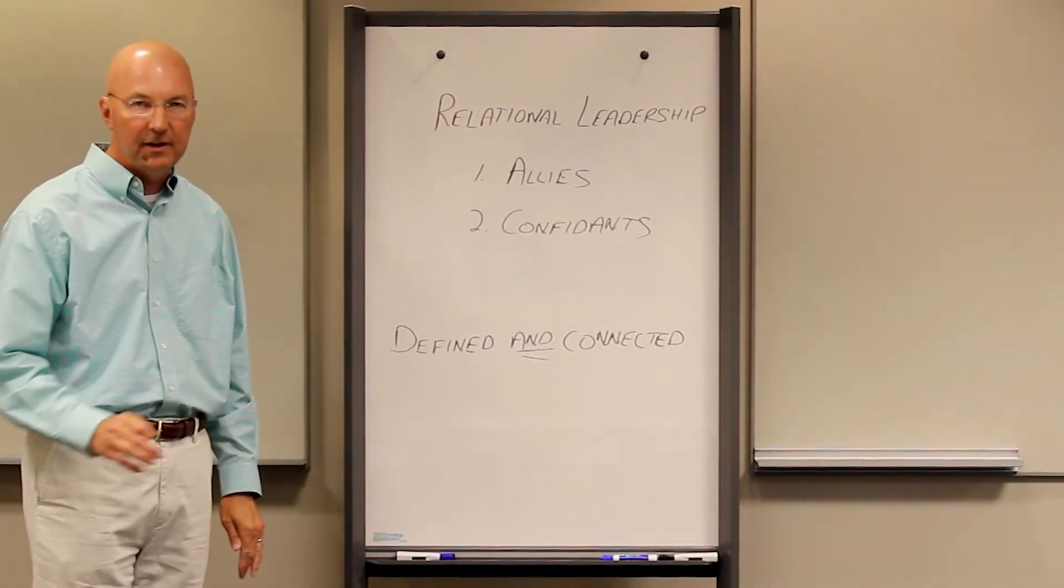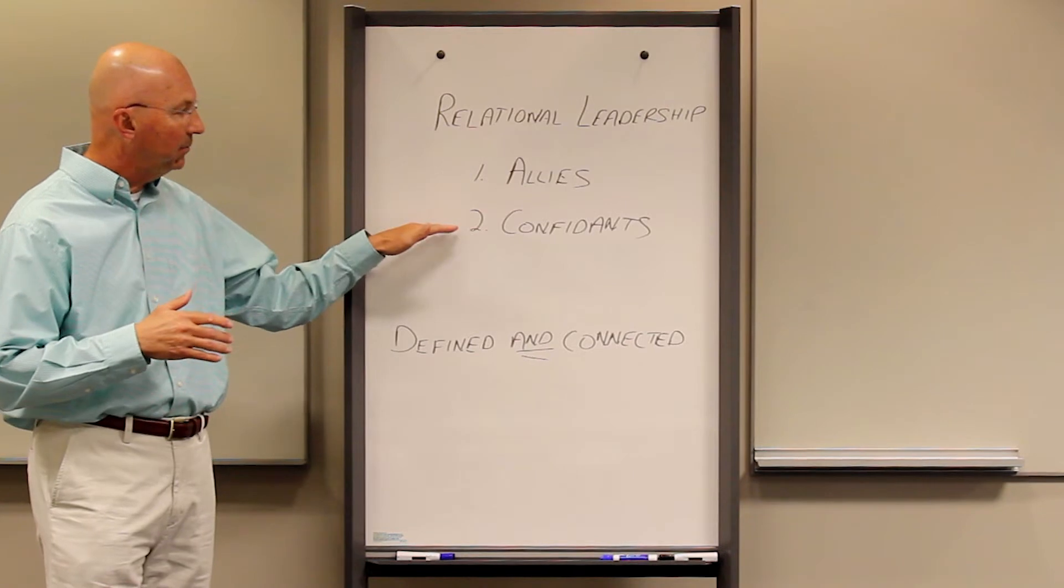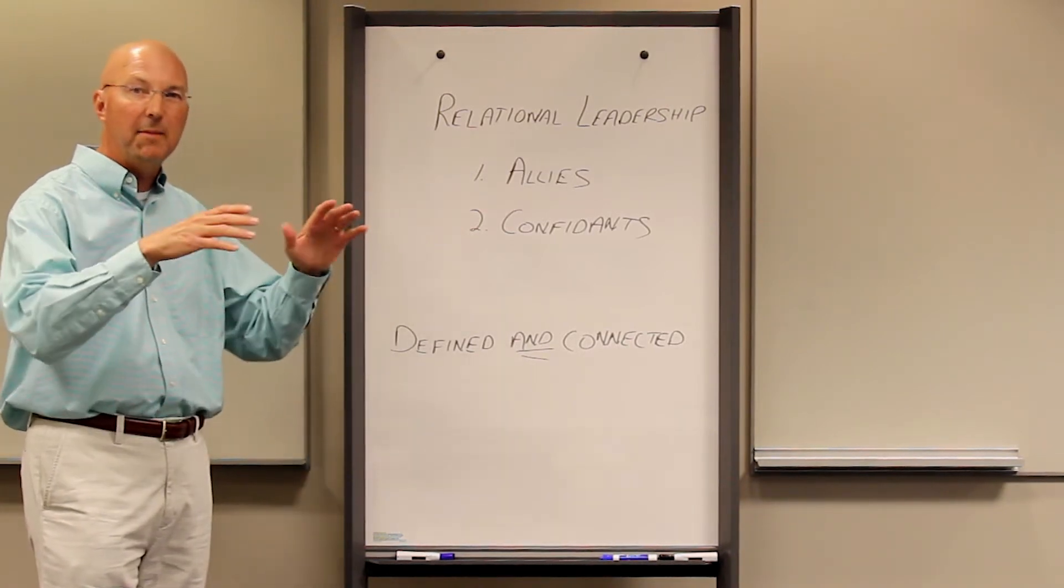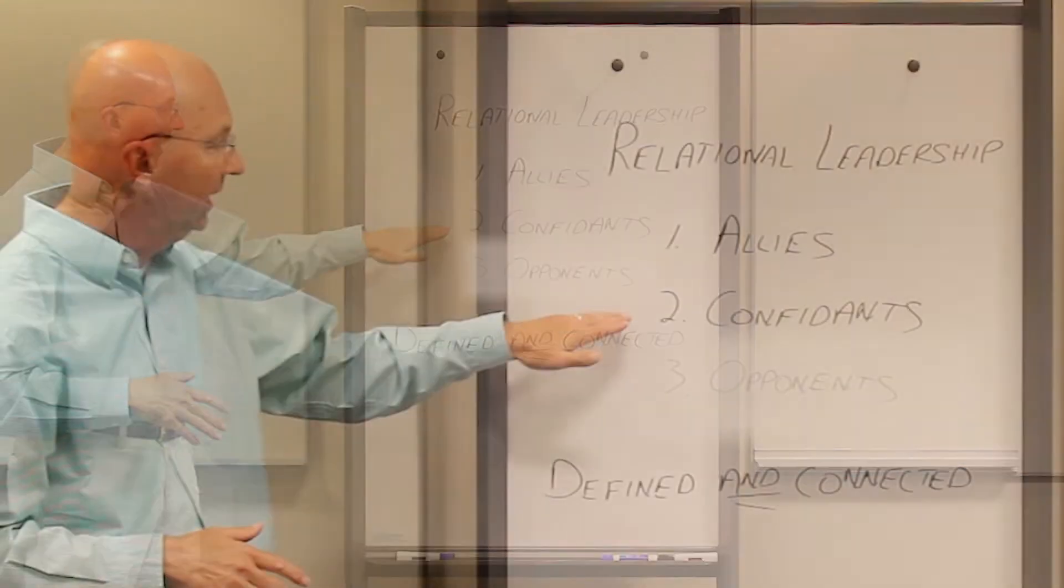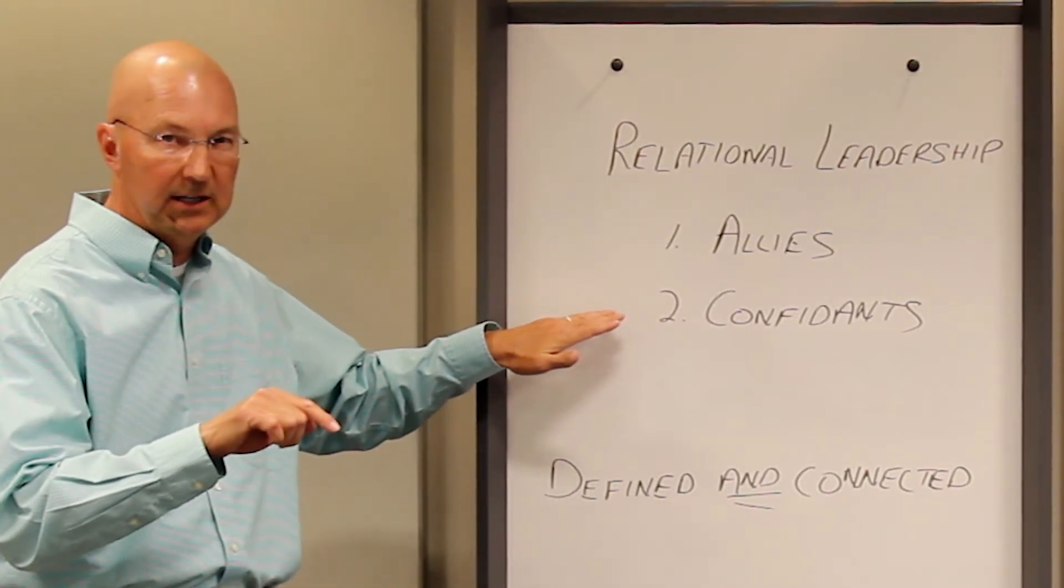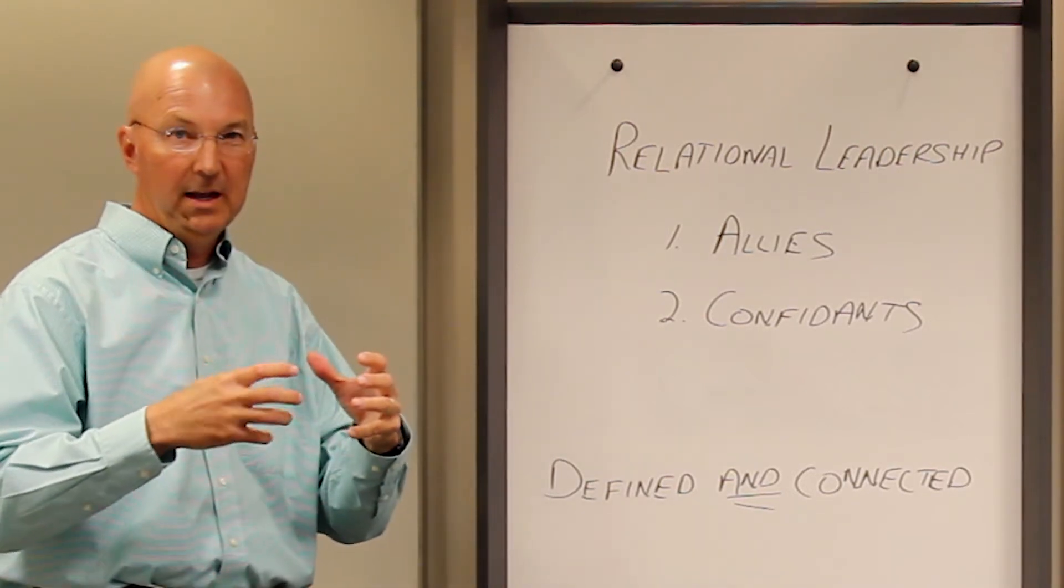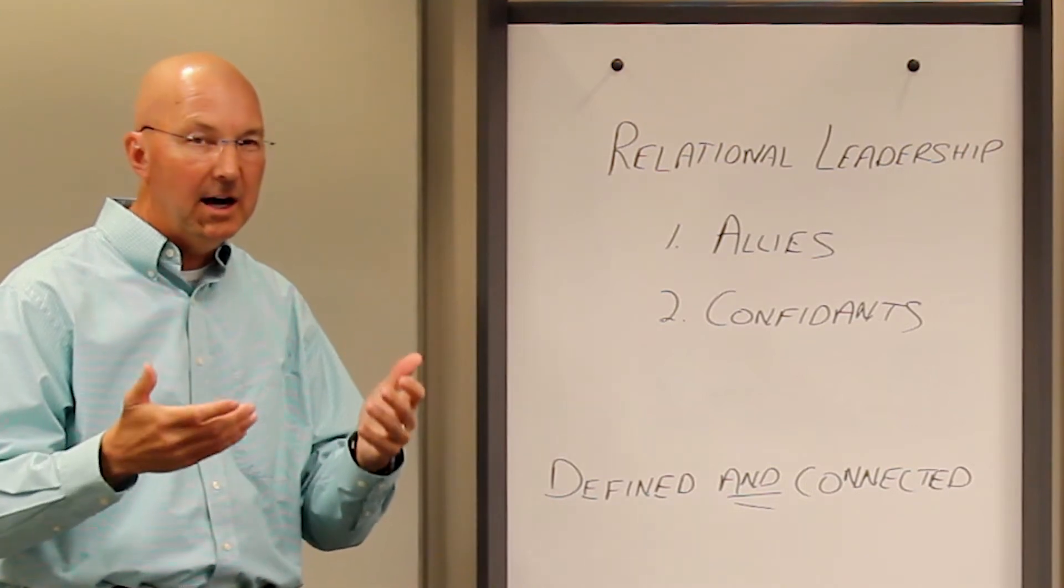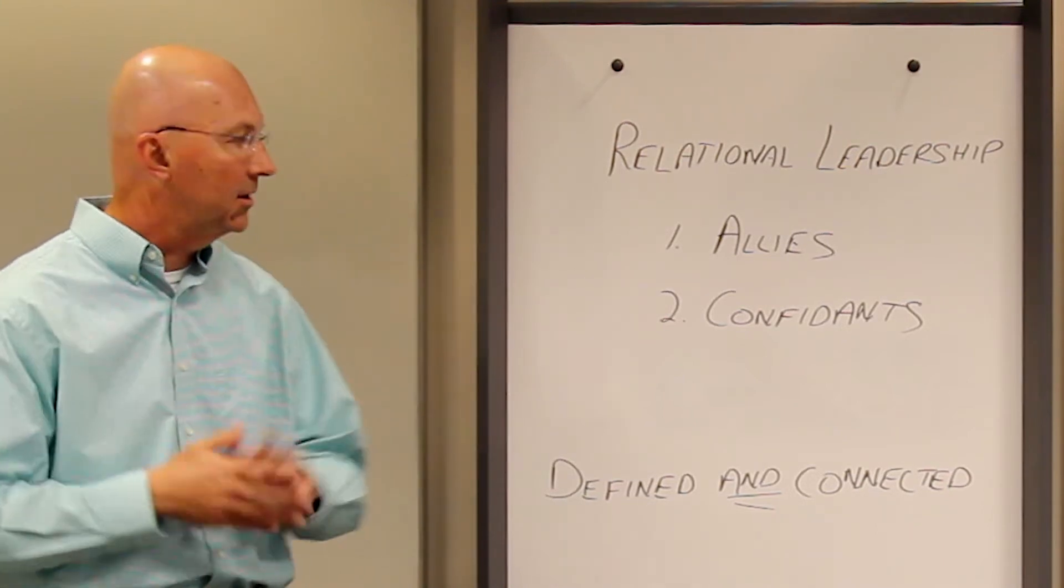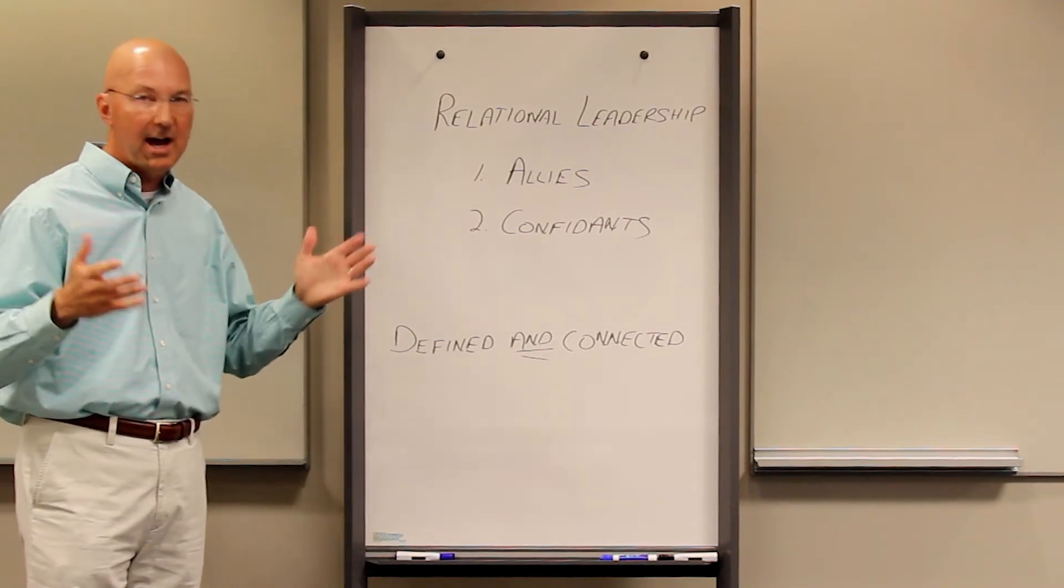The second group would be confidants. Bolsinger defines confidants as people more concerned about us as leaders, more concerned about you as a leader than about your organization or ministry. These folks can be helpful. We need to be a little bit careful. When they're inside the organization, be careful about people who care more about us than the mission. That can become unhealthy if it's all about following us instead of following Jesus, instead of putting them in touch with Christ. Better when these people, confidants, are outside of the system.